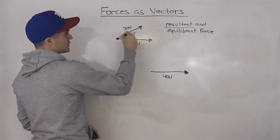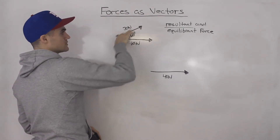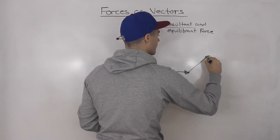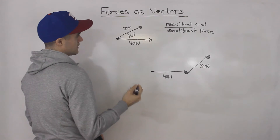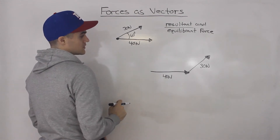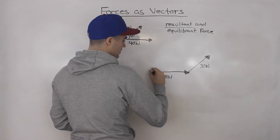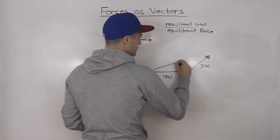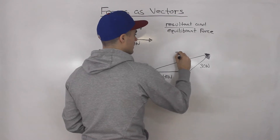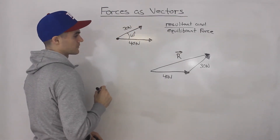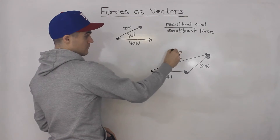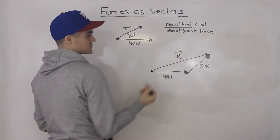We have to add the 30 newton vector to it. The 30 newtons is going this way, so if we draw that here, it goes like that. We basically took that vector and shifted it over to add it to the 40 newton vector. The resultant is going to start from the tail of the first vector to the head of the last vector. So we need to find the direction and magnitude of this resultant vector.